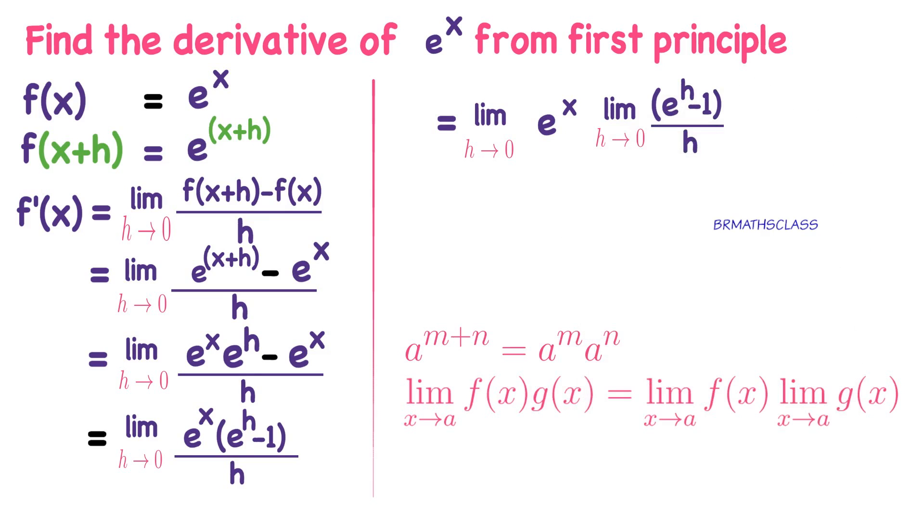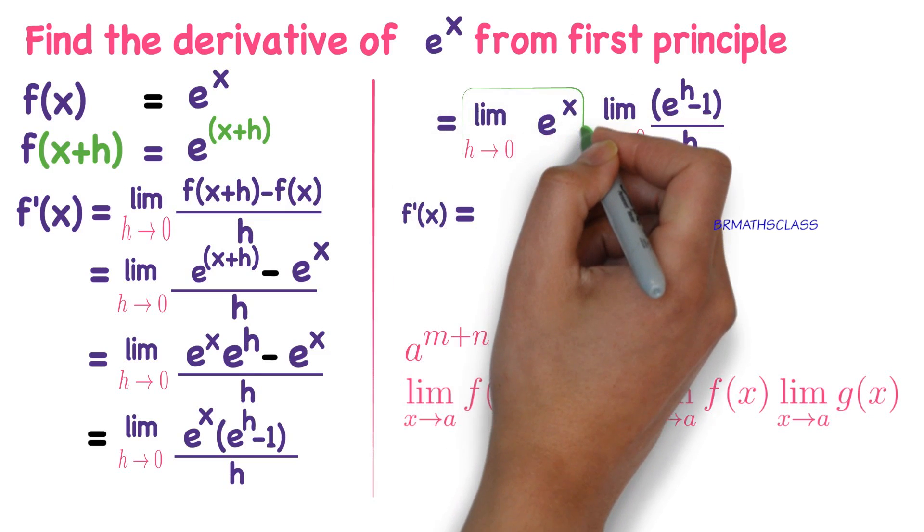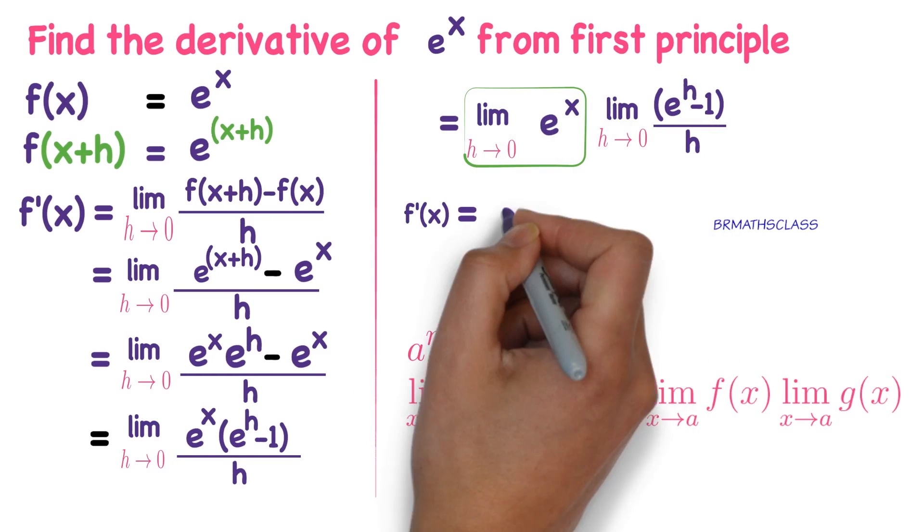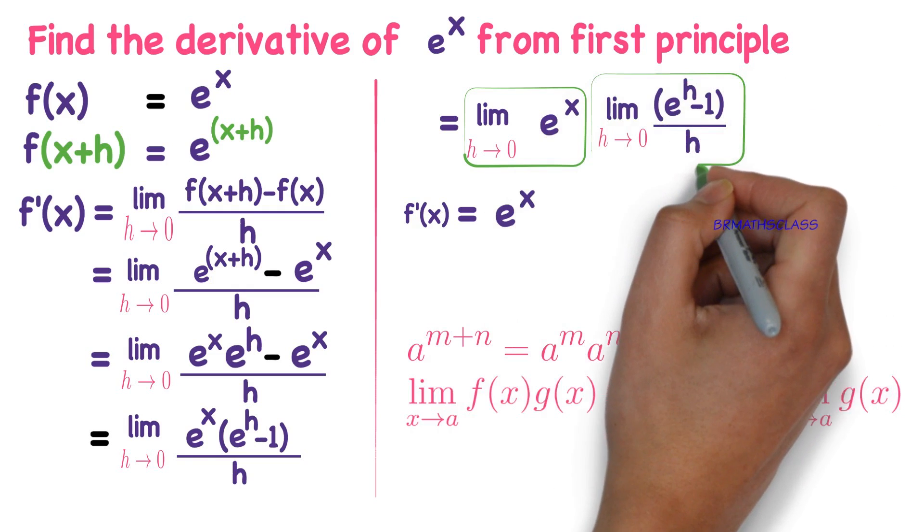You try to understand this from the previous step. Now f'(x) equals, observe this expression: limit h tends to 0 of e^x. e^x is nowhere related to h, so limit h tends to 0 of e^x is e^x only.